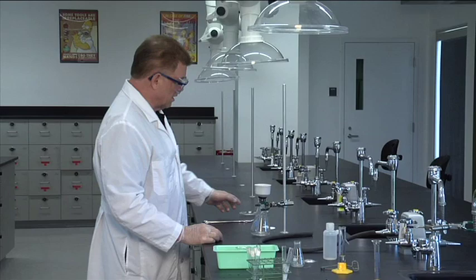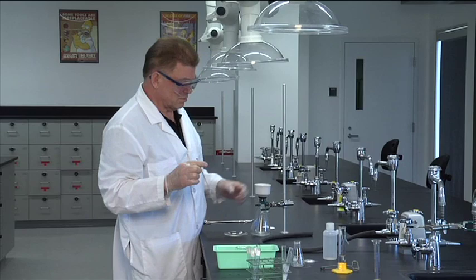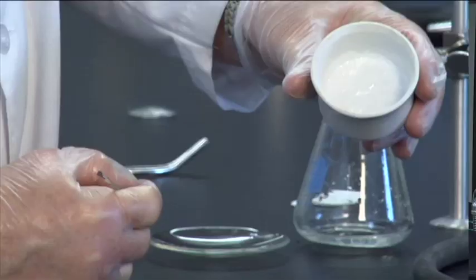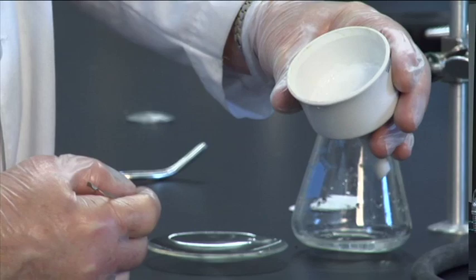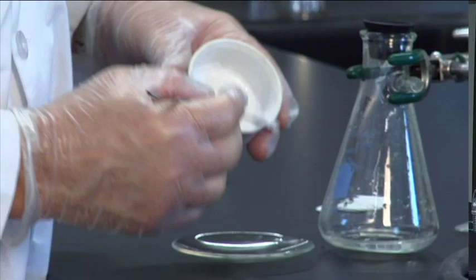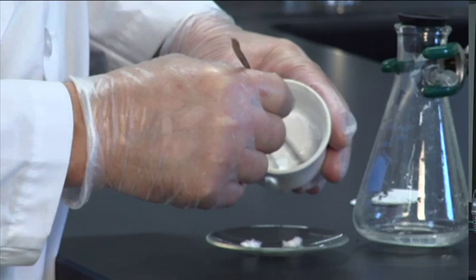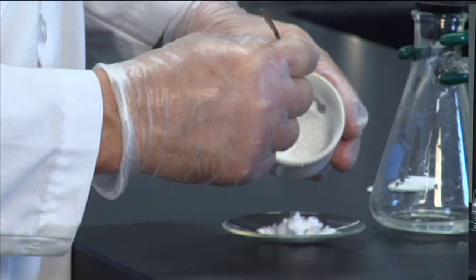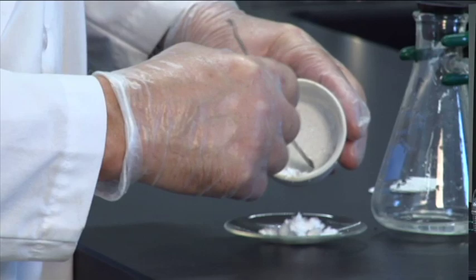I want to collect the crystals. I can do that on a watch glass with a spatula. Take a look in there. Maybe you can see those crystals. You may be too far away, but those are long white needle crystals. And I can scrape them out like this. This is one way to do it. Or I can just put the spatula underneath the filter paper and lift the filter paper out with all the crystals on it.